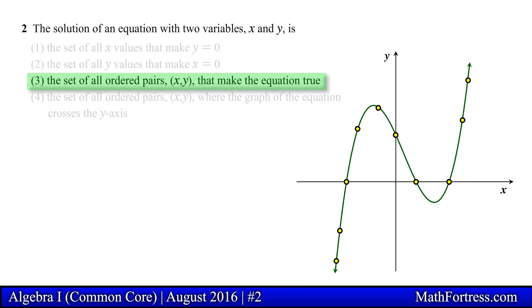Option 3 reads, the set of all ordered pairs (x,y) that make the equation true. This statement says that the solution to an equation is going to be the set of all points (x,y) that make the equation true, in other words the set of all points that are located on the curve of the equation. This statement accurately describes the definition of a solution to an equation, so option 3 seems to be the correct answer.